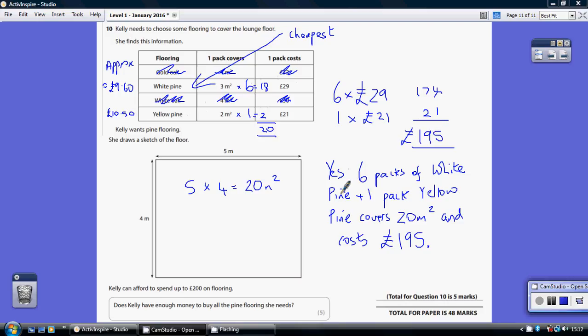So yes, six packs of white pine plus one pack of yellow pine does cover the 20 metres squared. And that costs £195. Does Kelly have enough money to buy all the pine flooring she needs? She does, as long as she doesn't mind a mixture between the two types of pine. Thank you.